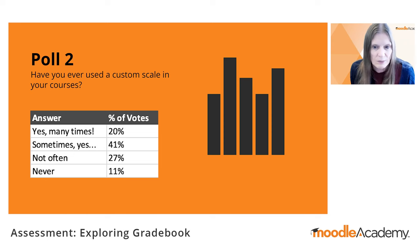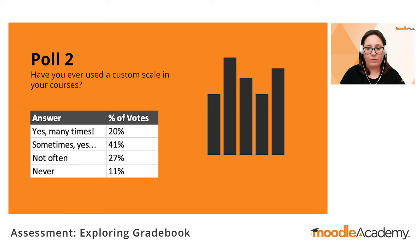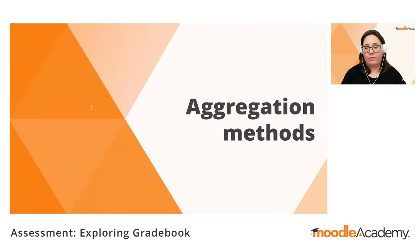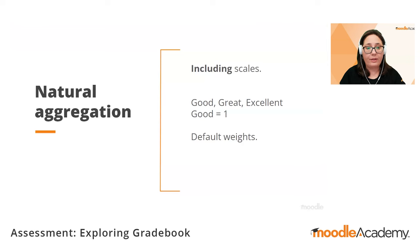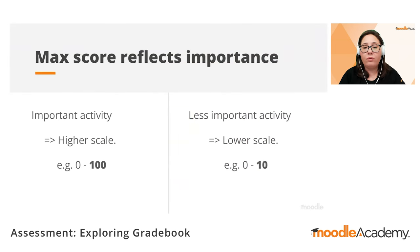Poll results show 41% saying they use custom scales sometimes, 20% saying many times, and 11% saying never. Let's move on to see the aggregation methods. We can start with the natural aggregation, which is the default setup in Moodle. In recent Moodle versions, natural aggregation includes scales where the first level counts as one point, not as a zero. It automatically calculates the weights according to the maximum score of the scale used. So if you give important activities a higher scale like 0–100 and less important activities a lower scale like 0–10, natural aggregation suits your needs.